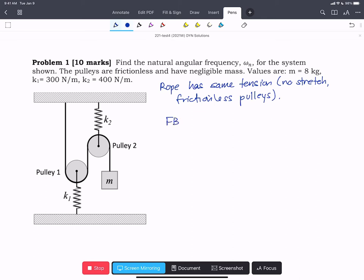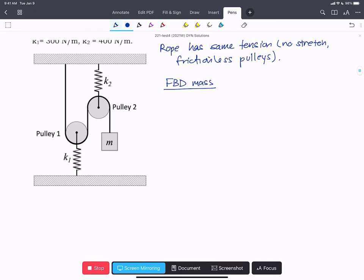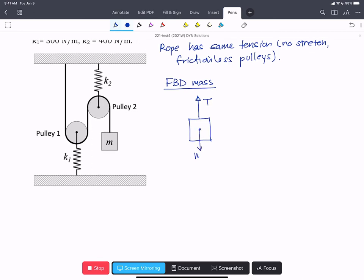We're going to start with a free body diagram of the mass. We have a mass that'll have some tension. The tension will be related in some way to the deformation of the springs. And then we have mg, the weight.